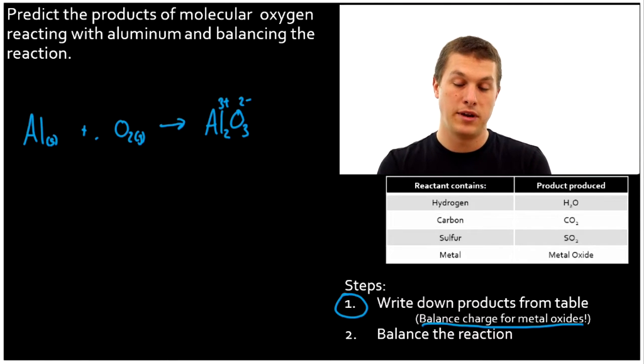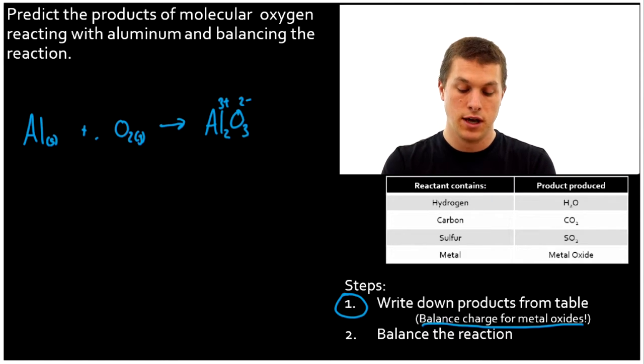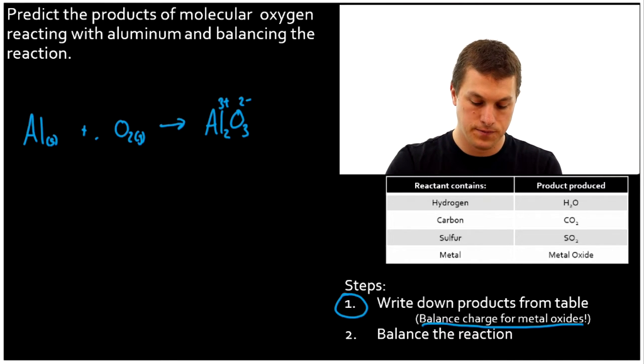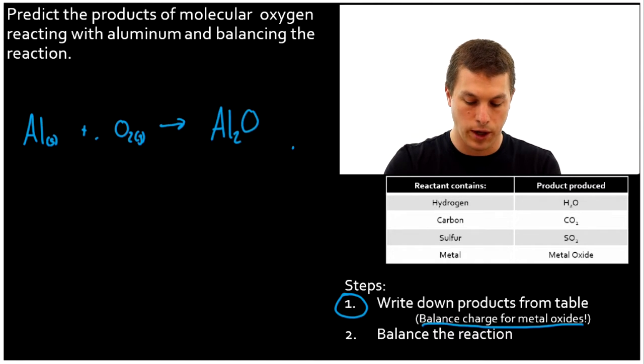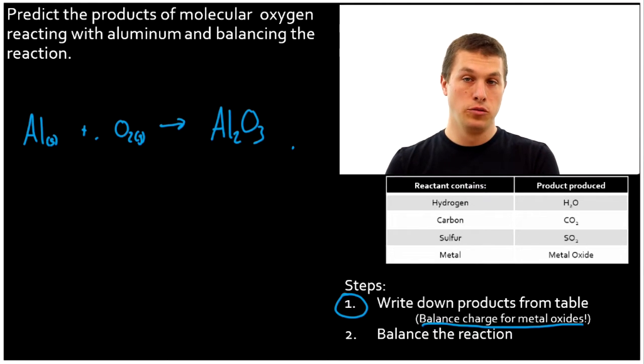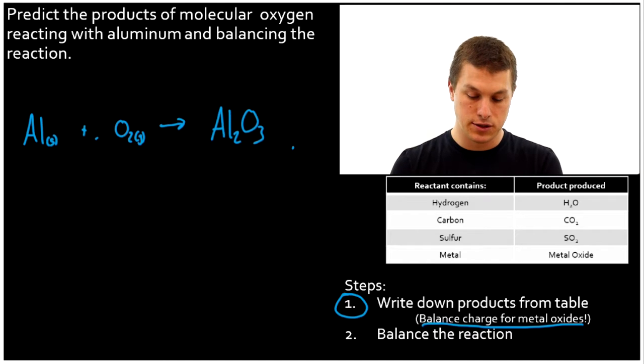Notice that the aluminum now contributes a total of +6 charge and the oxygen contributes a total of -6 charge. So they're neutral, they're balanced. I erased my aluminum oxide. Let's rewrite it. Al2O3. Okay, so we're through step one. We know we get out aluminum oxide, Al2O3. But now we need to balance our chemical reaction.